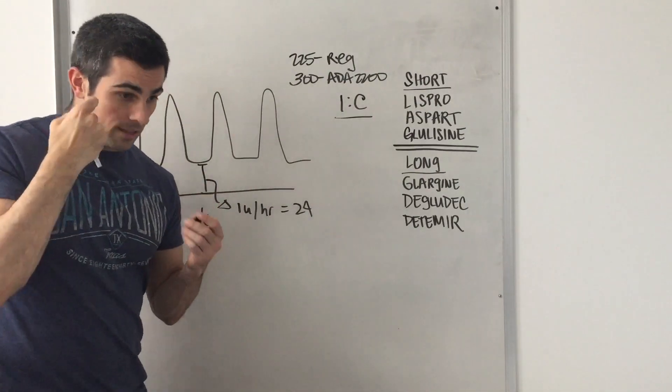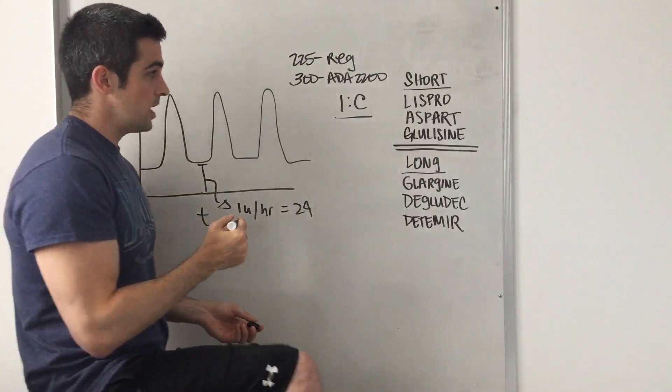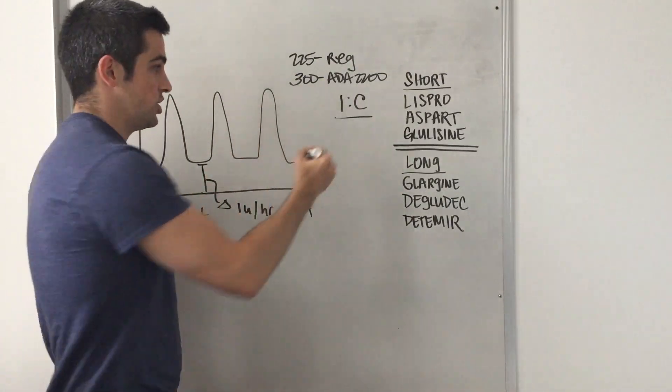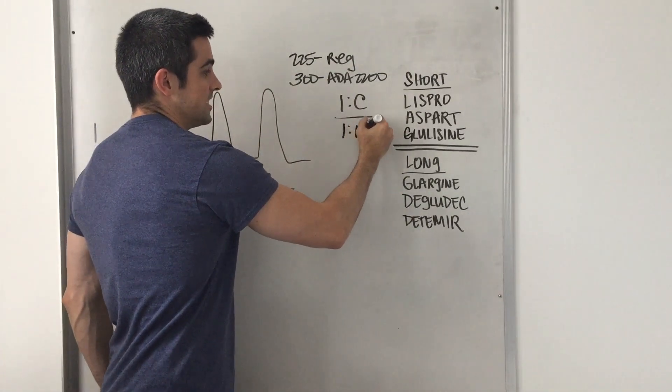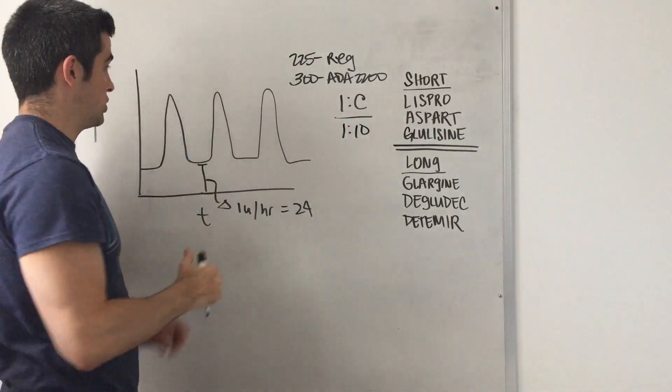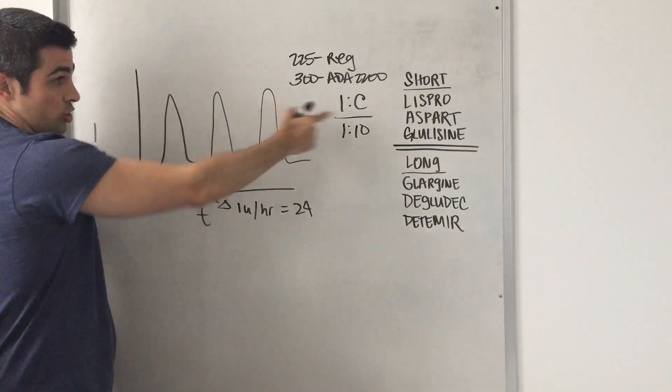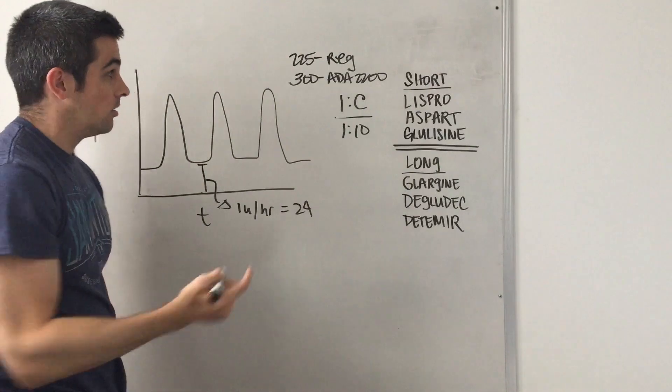Now a general person, just general normal person, nothing special, can have an I to C ratio, let's say 1 to 10. So the average patient has a 1 to 10 ratio.